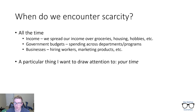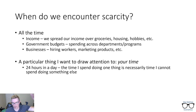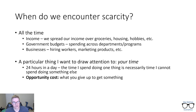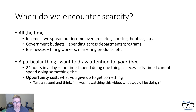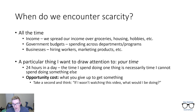One thing I want to draw your attention to that maybe you haven't thought about through an economic lens is your time. There are 24 hours in a day, seven days a week, 365 days in a year, and you're only on earth for a set amount of time. Any time you spend doing one thing is necessarily time you can't spend doing something else. This leads to the idea of opportunity cost — what you give up to get something. If I wasn't recording this video right now, I'd probably be taking a nap or playing video games. Whatever I would be doing, that is my opportunity cost. Since you can't be two places at once, every single thing you do has an opportunity cost associated with it.